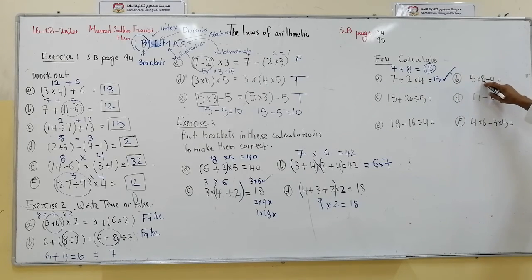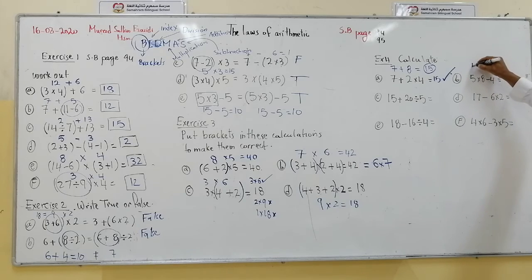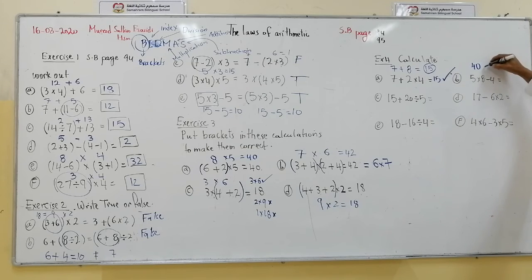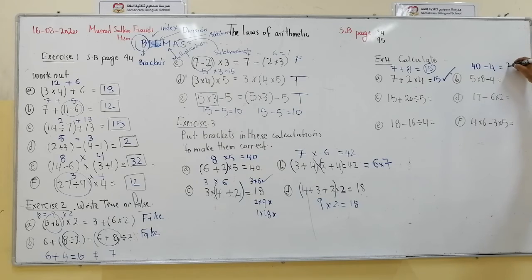Next: 5 multiplied by 8 is 40, minus 4 gives us 36. The answer is 36.